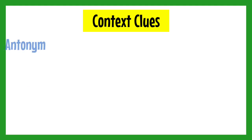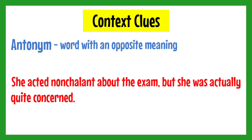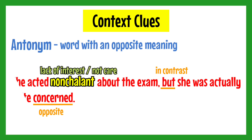Now let us have the letter A, which is Antonym. In this case, a word with an opposite meaning is given in the sentence. For example: She acted nonchalant about the exam, but she was actually quite concerned. You have to figure out the meaning of the word nonchalant. The context clue is 'actually quite concerned,' and the word 'but' signals that the idea it introduces is opposite to the previous one. Therefore, the meaning of nonchalant is something opposite to concerned — showing a lack of interest or does not care.